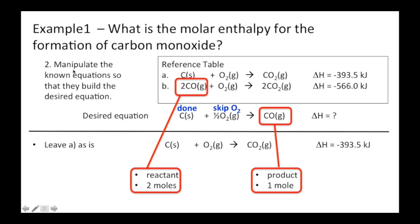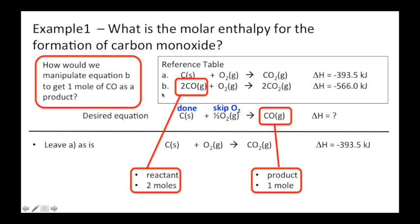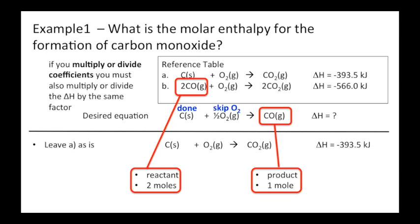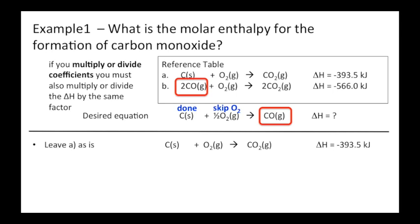Now I want to manipulate the known equations to build this equation. How would I manipulate equation B to get one mole of carbon monoxide as a product? Well, I have to reverse that whole equation, and I've got to also divide it by two. So I'm going to reverse the equation and divide by two. So I now have flipped this equation: CO2, CO, half of an oxygen, and I divided the whole thing by two. This was negative, so it's now positive, and I divided it by two.